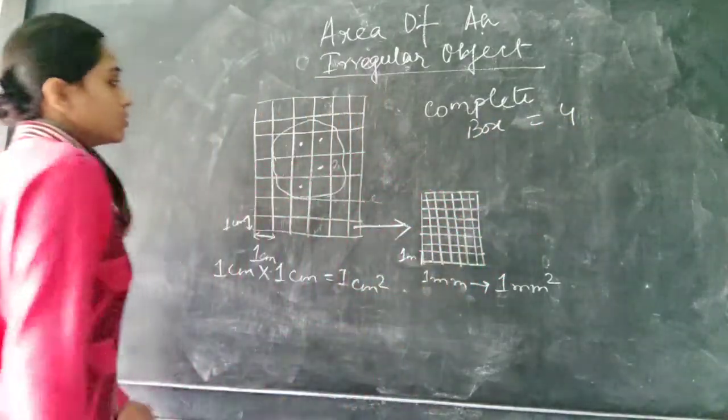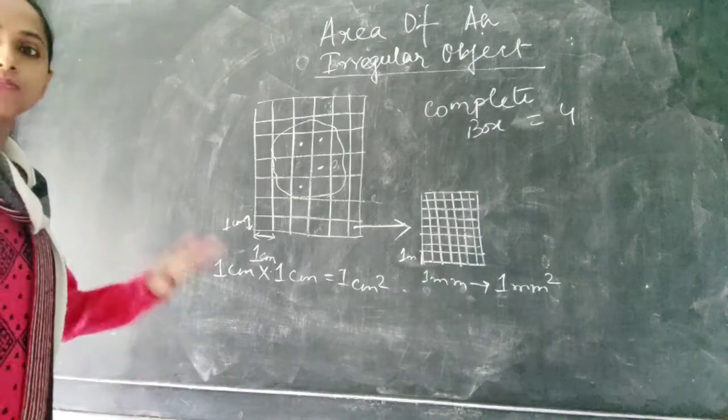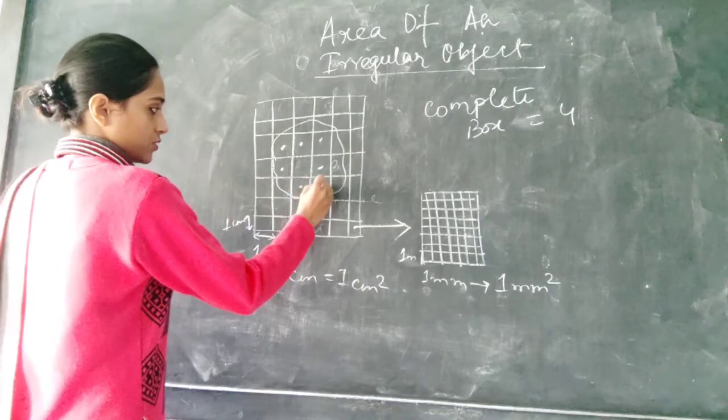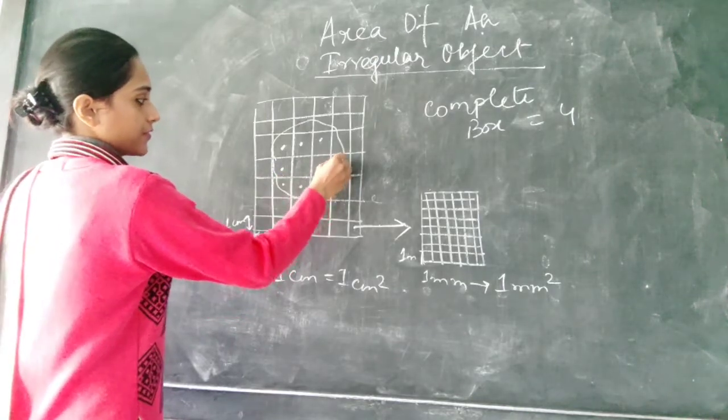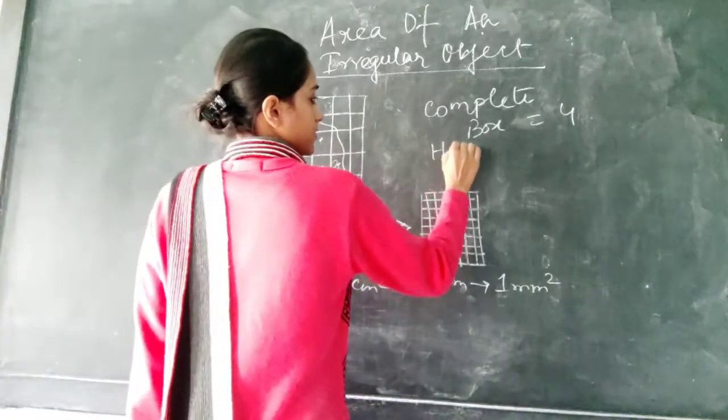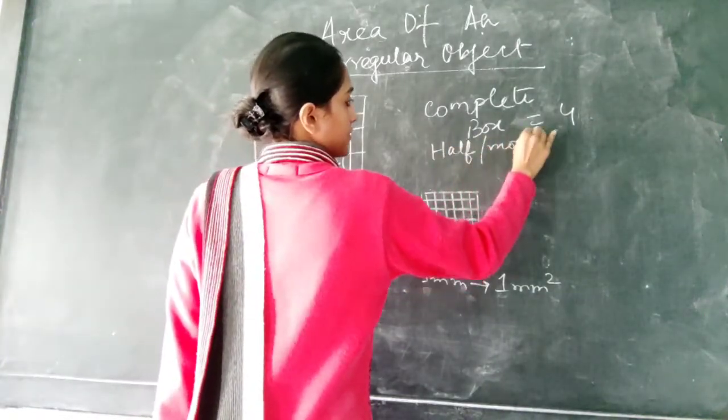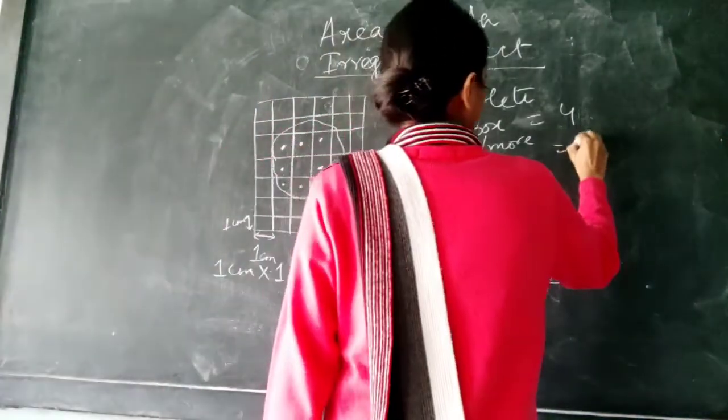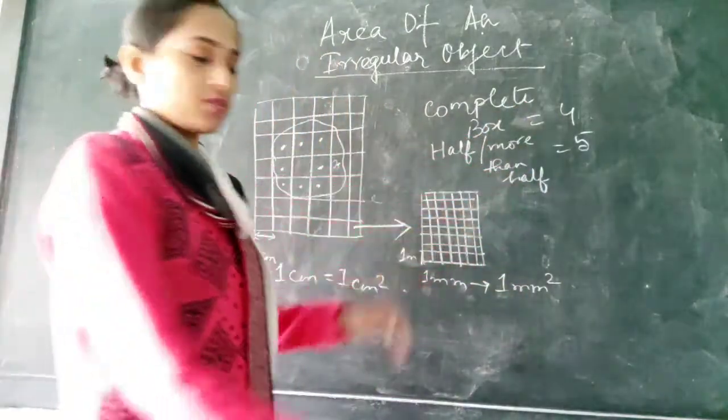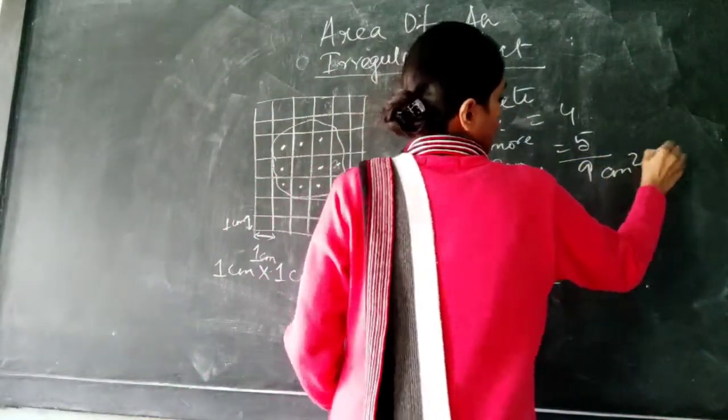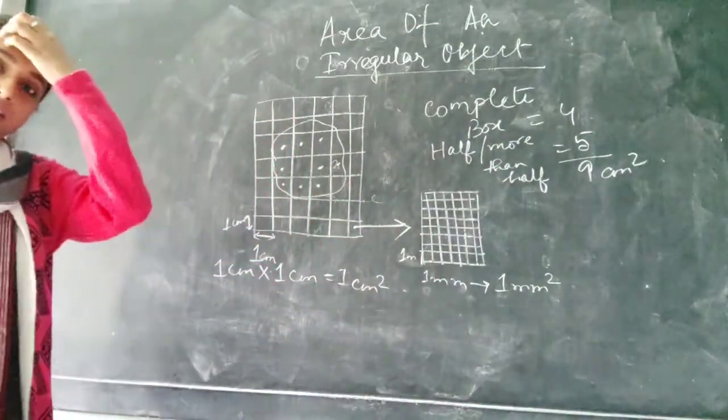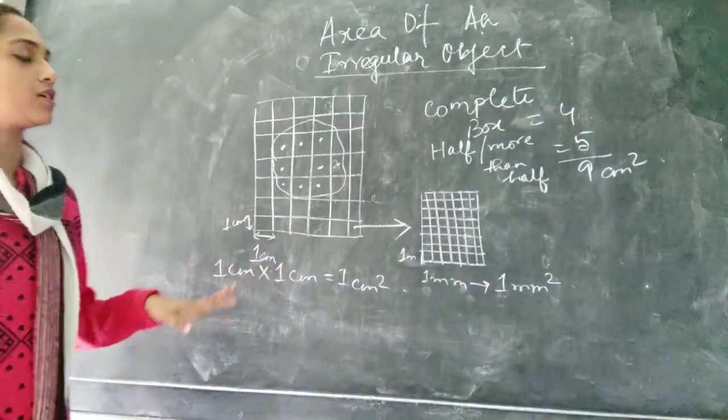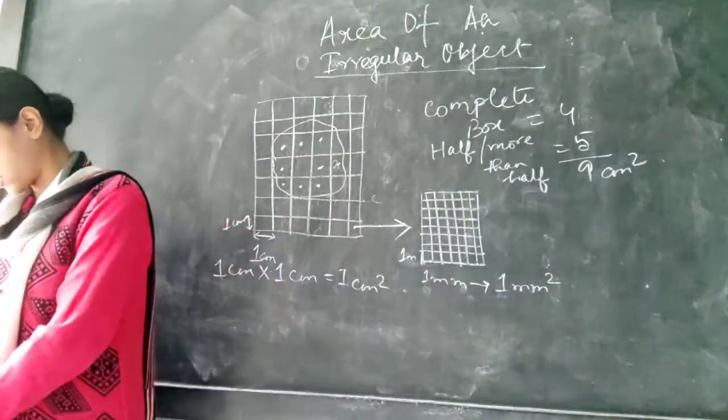So 4. You will next take half or more than half. So 1, 2, 3, 4, 5. So half or more than half is 5. So 5 plus 4 giving us 9. So the overall area of that irregular object is 9 cm square.